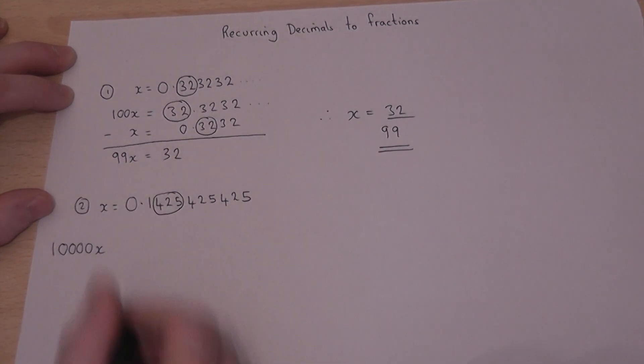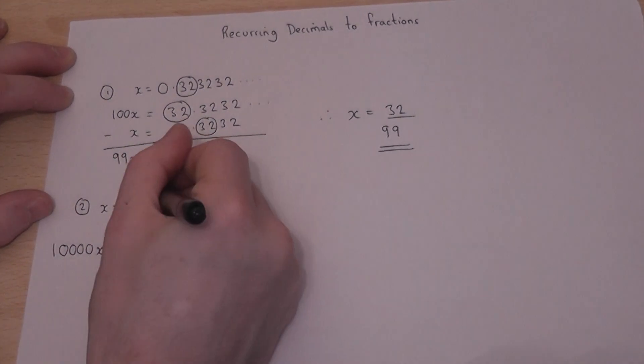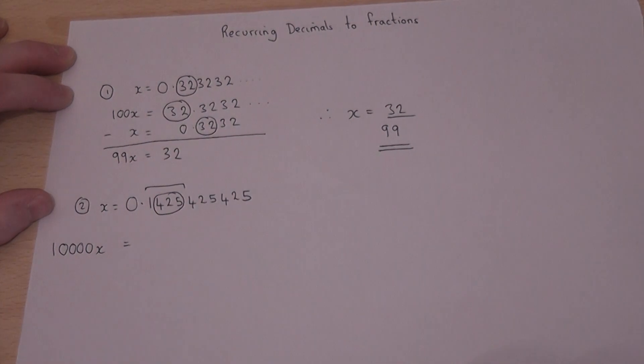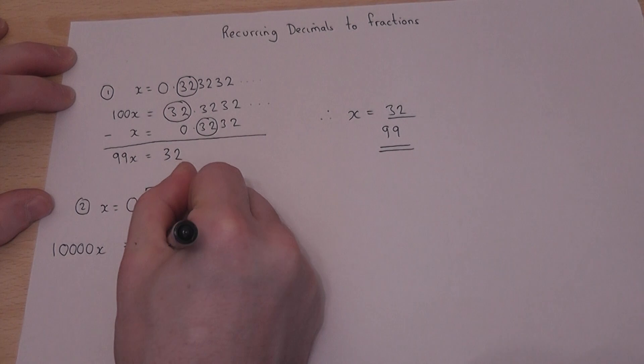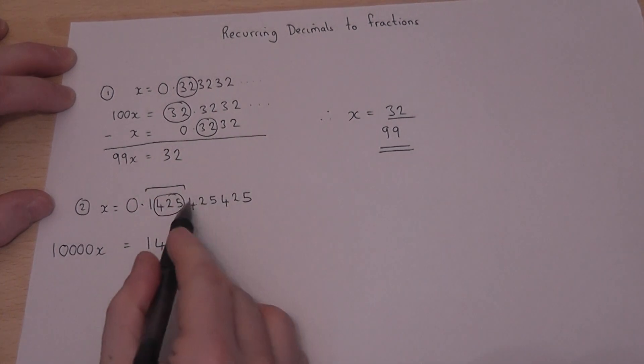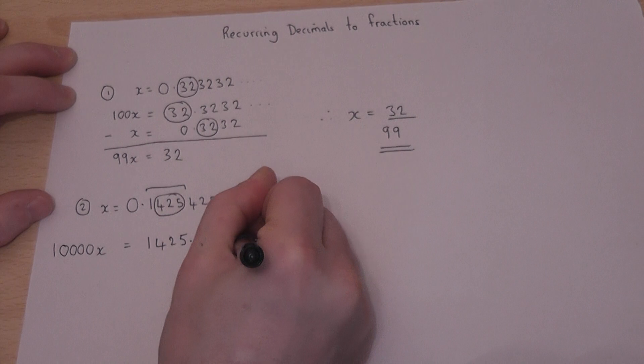So 10,000x will equal that entire part of the number moved to the left of the point. So we have 1425.425425.